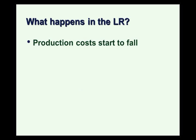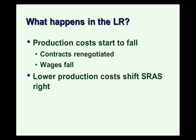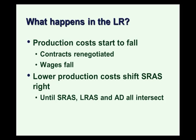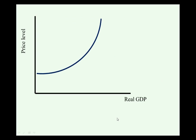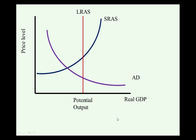So what happens in the long run? There are forces that can push us back to potential output and the long run equilibrium. With a lot of excess capacity and unemployment too high, there's not enough demand for goods and services, so production costs start to fall. Contracts are renegotiated and wages might fall. Lower production costs shift the short run aggregate supply curve to the right. This happens until all three curves intersect — until we reach the long run equilibrium. Self-correction from a recessionary gap results in a new equilibrium at the long run point.